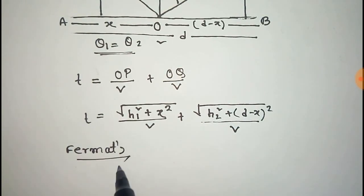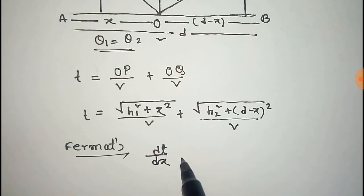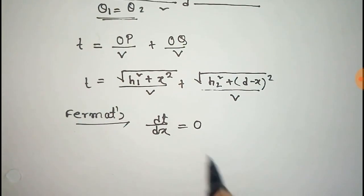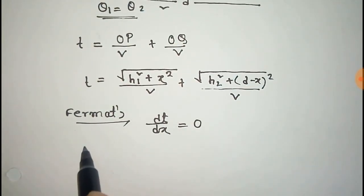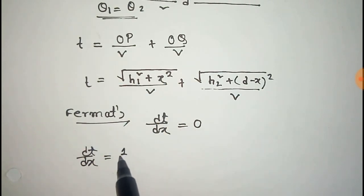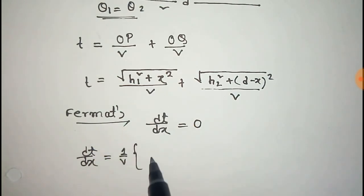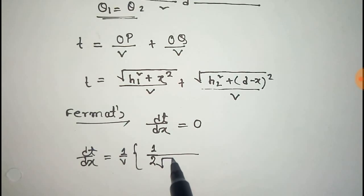From Fermat's principle, we know that the total time taken by light would be either maximum or minimum, so dT/dX is equal to 0. We have to take the derivative with respect to X. Since 1 over V is constant, the derivative of the first term gives 1 over 2 root over (H1 squared plus X squared).